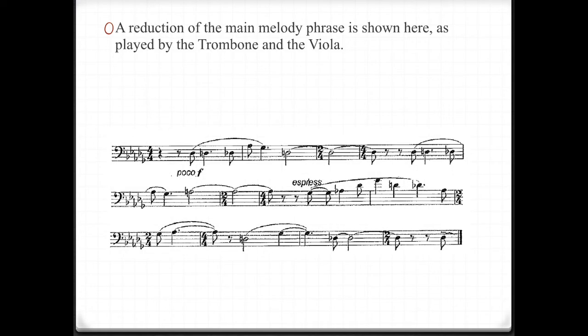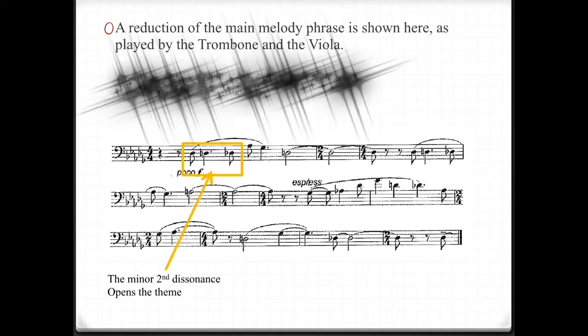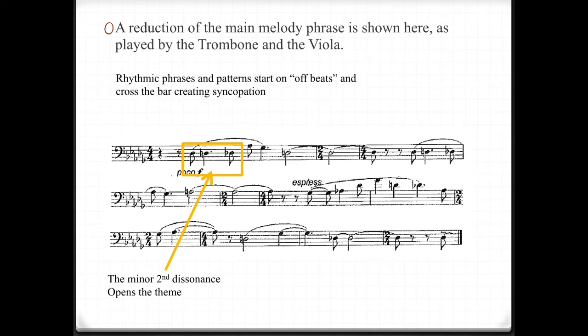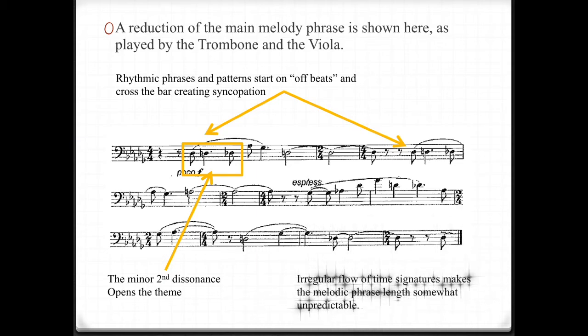This is played by the trombone and the viola. The minor second dissonance opens the theme, as you can see here. Rhythmic phrases and patterns start on off-beats and cross the bar, creating syncopation. An irregular flow of time signatures makes the melodic phrase length somewhat unpredictable.